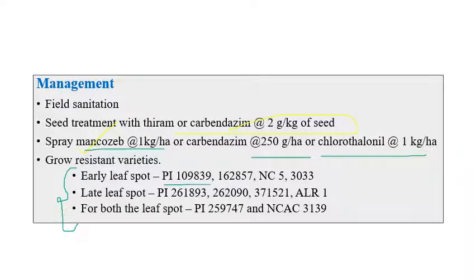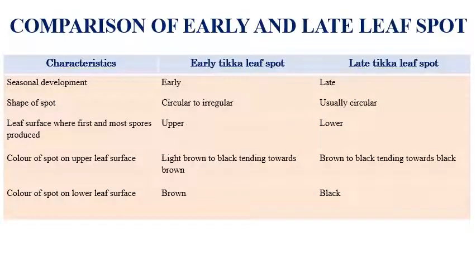Resistant varieties for Early Tikka include PI 109839, 162857, and NC 53303. For Late Tikka, PI 261893, 262090, 371521, and ALR1 are recommended. For resistance to both leaf spots combined, PI 259747 and NCAC 3139 are the resistant varieties available.